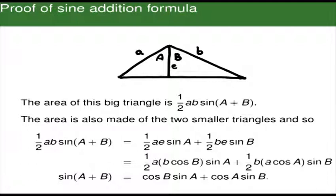We notice the area is also made up of the two smaller triangles. So one half AB sine(A+B) must equal the area of the triangle with angle A, which is one half of A times E sine A, plus the area of the triangle with angle B, which is one half B times E sine B. Now we need to work out what E is. With just a little trigonometry, you can see that E equals B cosine B, and similarly E equals A cosine A. We can substitute these into the formula, and we notice we have half AB in three different terms, so we can cancel them.